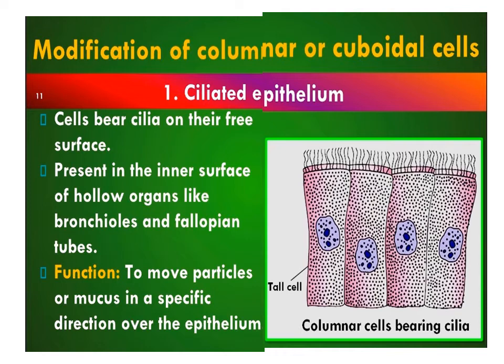Ciliated epithelium: when columnar or cuboidal cells bear cilia on their free surface, the epithelium is called ciliated epithelium. It is mainly present on the inner surface of hollow organs like bronchioles and the fallopian tube. The cilia help to move particles or mucus in a specific direction over the epithelium.